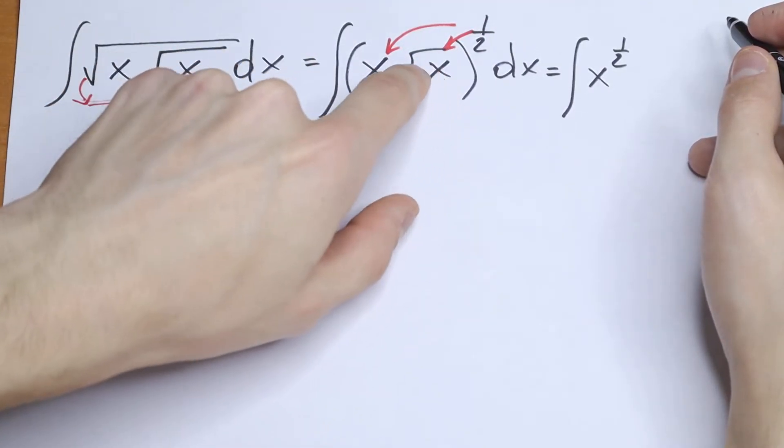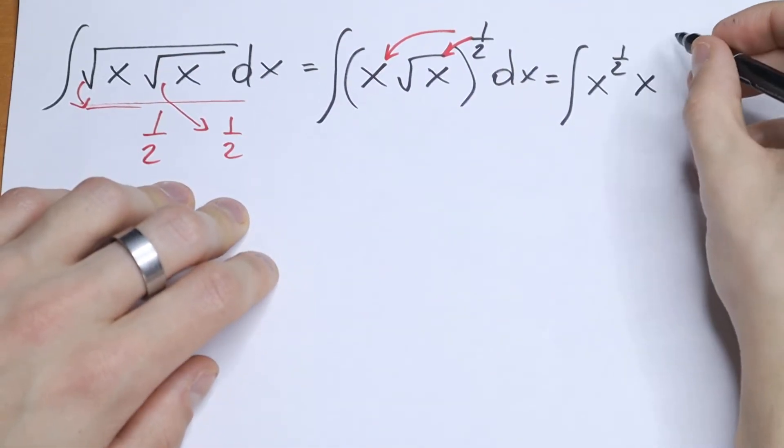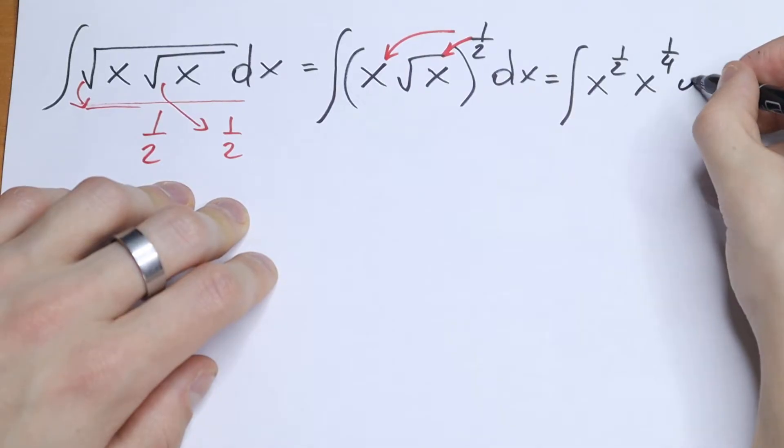So we need to multiply this 1 half and this 1 half. And as a result we will have x to the power 1 fourth times x to the power 1 fourth dx.